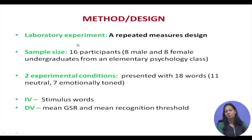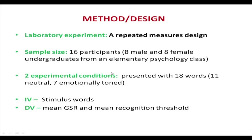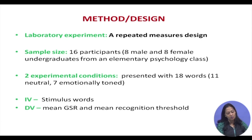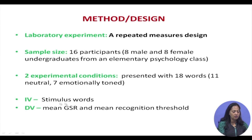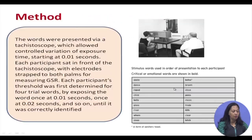McGuinness created a repeated-measures design. He chose 16 participants from his elementary psychology class and presented them with two experimental conditions. They were presented with 18 words — 11 neutral and 7 emotionally toned words. The independent variable was the stimulus words themselves, of which 11 were neutral and 7 were emotionally toned — many with a sexual connotation. These words were presented with the help of a tachistoscope.